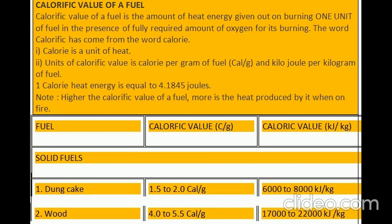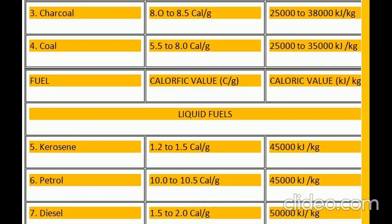Calorific values of solid fuels: 1. Dung cake — 1.5 to 2.0 cal per gram, 6,000 to 8,000 kilojoules per kilogram. 2. Wood — 4.0 to 5.5 cal per gram, 17,000 to 22,000 kilojoules per kilogram. 3. Charcoal — 8.0 to 8.5 cal per gram, 25,000 to 38,000 kilojoules per kilogram. 4. Coal — 5.5 to 8.0 cal per gram, 25,000 to 35,000 kilojoules per kilogram.